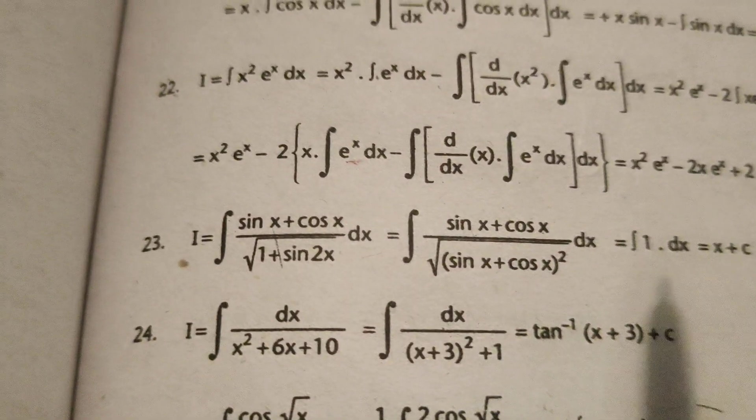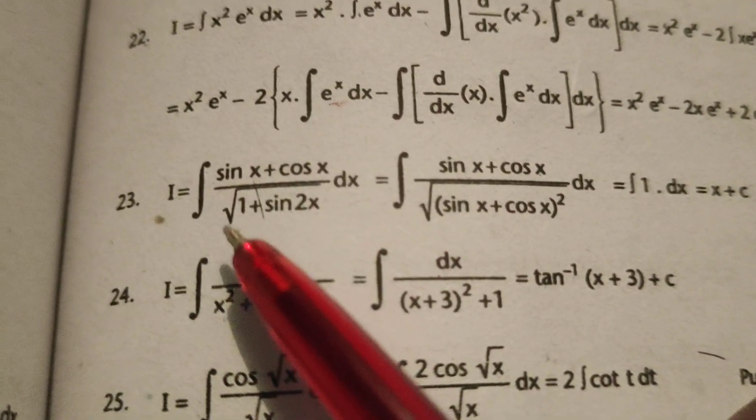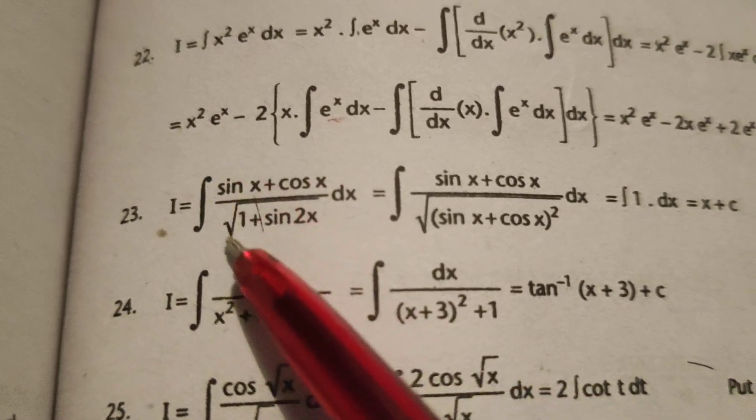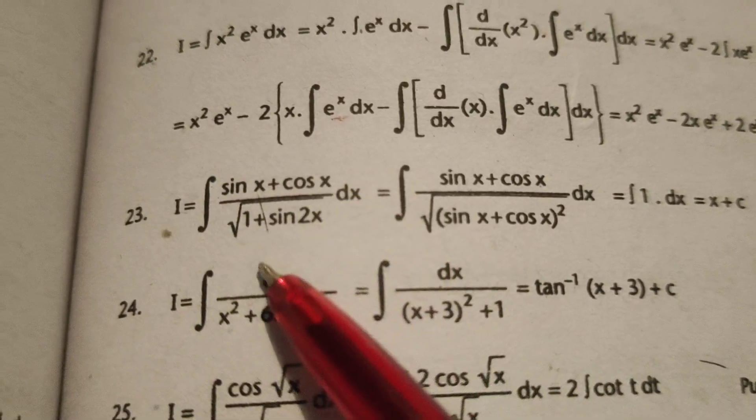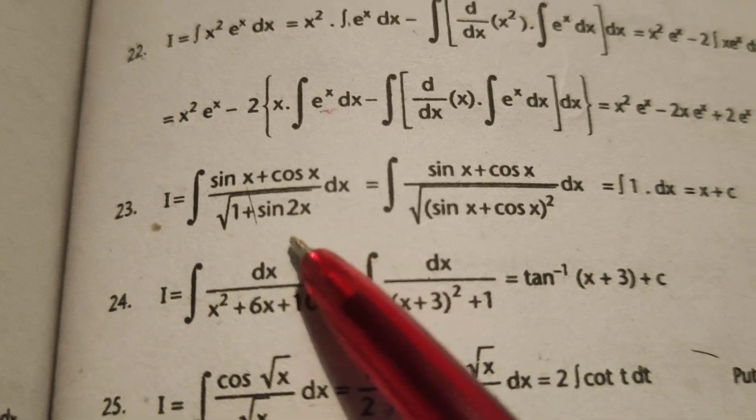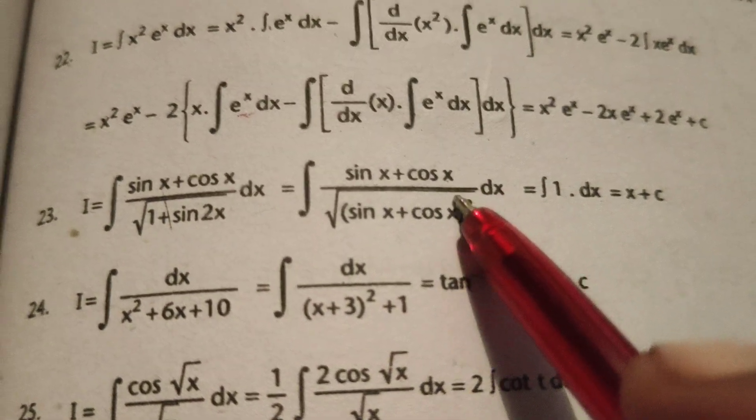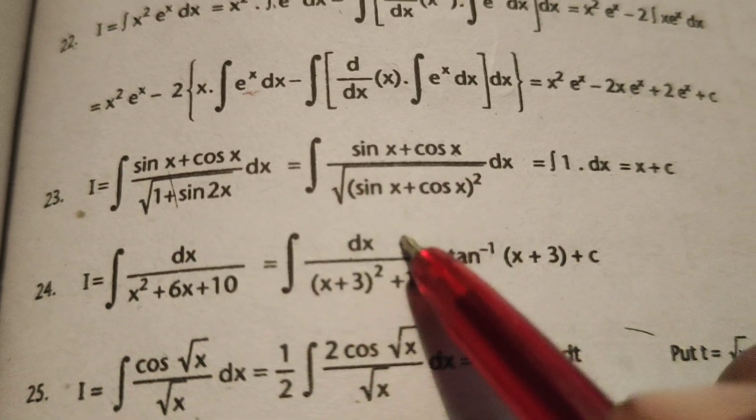Hi everyone, this is Dr. Ati. Today we're going to explain this evaluated integral problem: the integral of (sin x + cos x) over the square root of (1 + sin 2x) dx. For sin x plus cos x in the numerator, I write it as (sin x + cos x)².